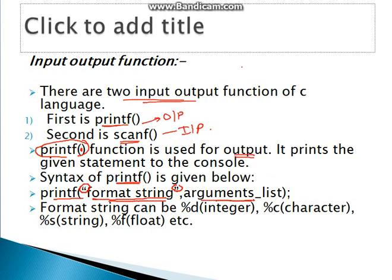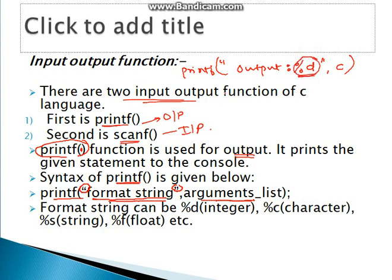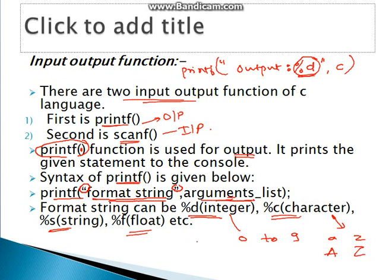In the printf function, within the double quotes you write the format specifier such as %d, and in the argument list you write the variable name — for example, c — where the value of %d is defined, so the output changes automatically. The format specifiers are: %d for integer, %c for character, %s for string, %f for float. Integers are digits 0 to 9; characters are from lowercase a to z and uppercase A to Z.